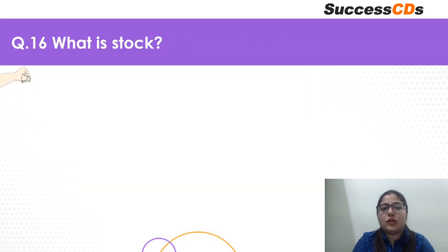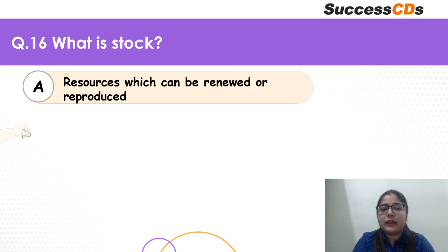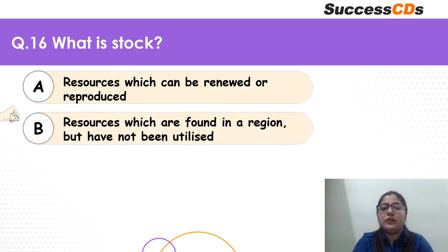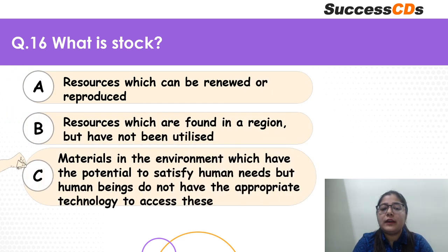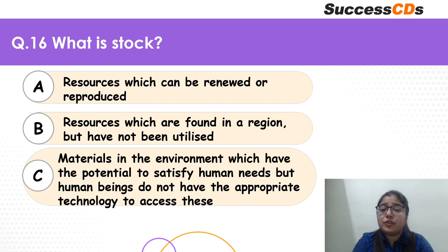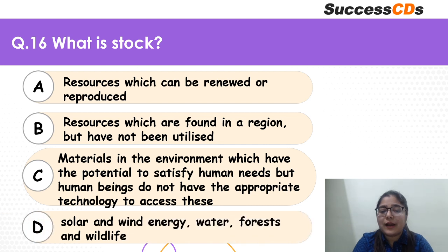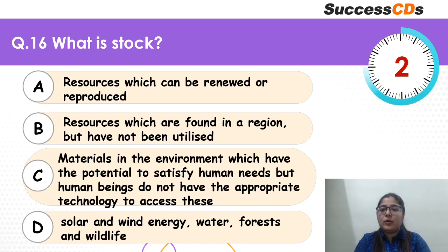Let's move to question 16: what is stock? Resources that can be renewed? Resources found in a region not utilized? Materials in the environment with potential to satisfy human needs but human beings do not have the appropriate technology to access them? Or solar, wind energy, water, forest and wildlife? Time begins now — again an easy question.